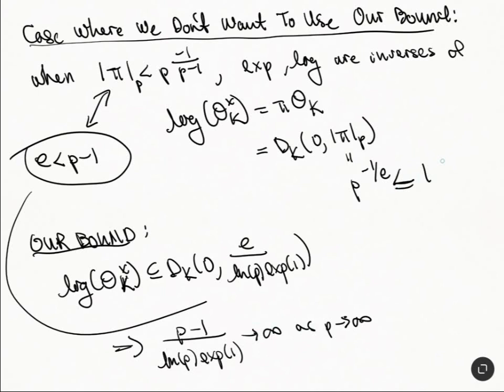So our bound is not good. This thing is always less than or equal to 1 for all p. So this one's uniformly bounded and this one's not uniformly bounded. And so in the situations where e is less than p minus 1, this is clearly a better thing to do. Alright, that's all I want to say about this.